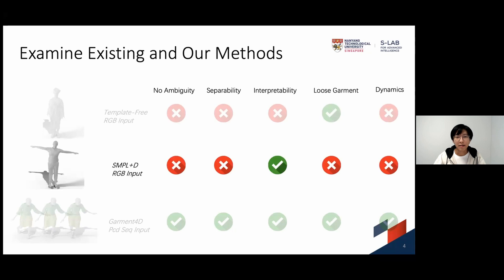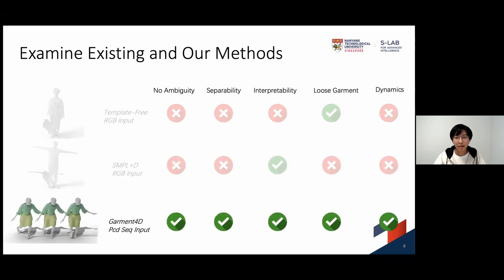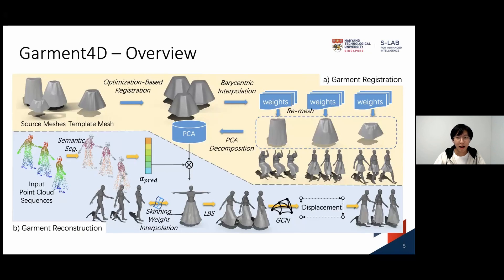The other type of methods that depend on SMPL or its variants have good interpretability. However, they typically lack the ability to be separated from body or model loose garments. In order to remove the restrictions of previous methods and meet all five conditions, we propose Garment 4D. It takes point cloud sequences as input, which removes the ambiguity and brings the ability to model garment dynamics. Now, let's dive into our design of Garment 4D.